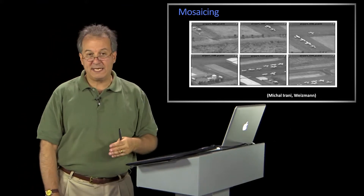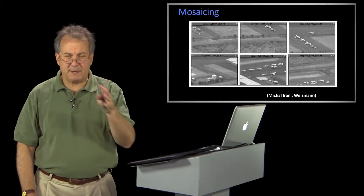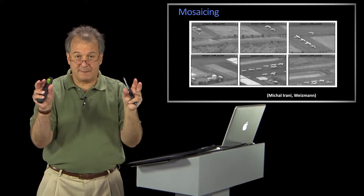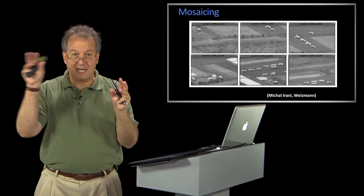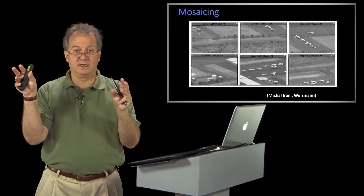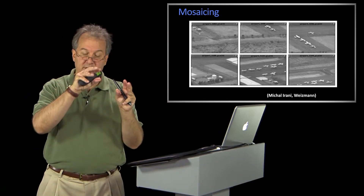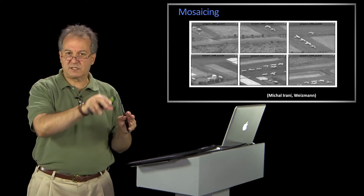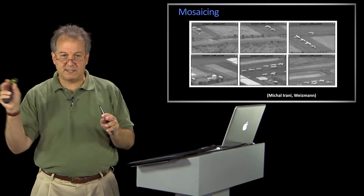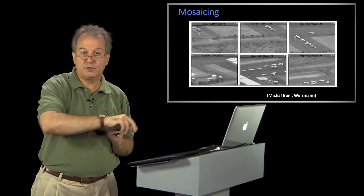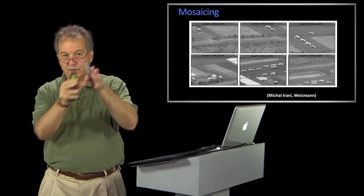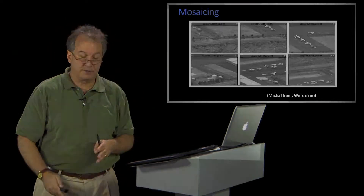Another example here: mosaicing. We've talked about mosaicing before — we talked about panoramas, about aligning images and bringing them together. Well, instead of just a small discrete set of images, suppose you actually have a video. So you're taking your camera and you're panning it around.